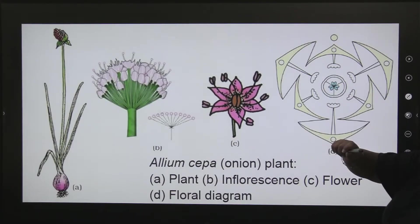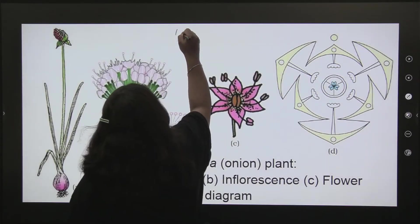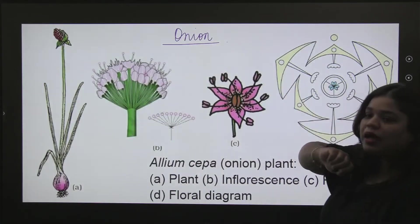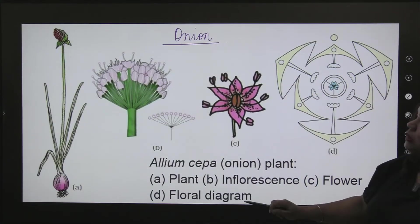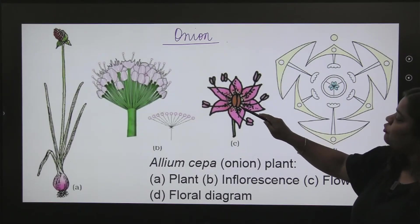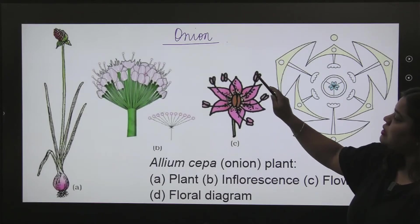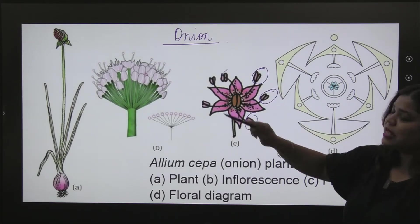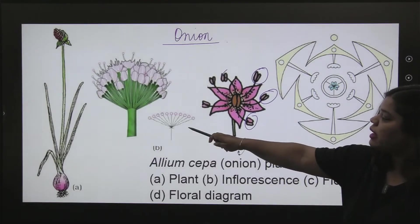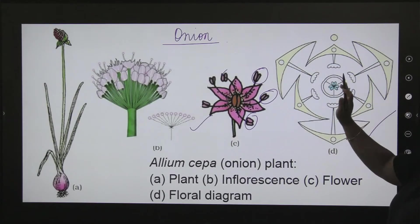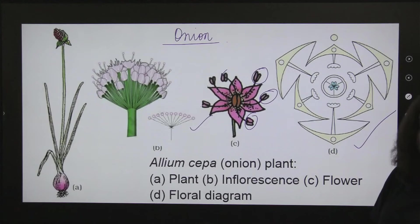Here, what we are showing is all about the Liliaceae family. First, if you look here, we are talking about onion — showing the bulbs. Then, the anthers are fused with your tepals. Counting the tepals: two, three, four, five, six. Umbel-type inflorescence, which I told you about — you will see this type of inflorescence. And lastly, this is your major floral diagram which you have to remember.